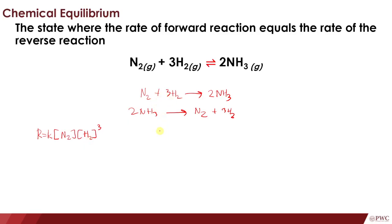For the reverse reaction, 2NH3 → N2 + H2, the rate is equal to some constant K2 times the concentration of NH3 raised to the power of its coefficient, which is 2. At chemical equilibrium, the rate of the forward reaction equals the rate of the reverse reaction, so these two expressions are equal.